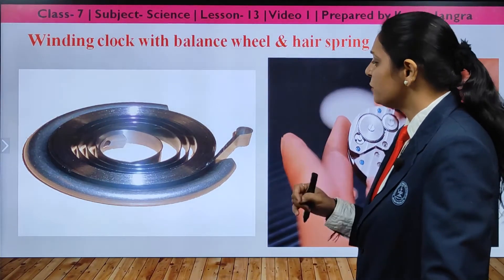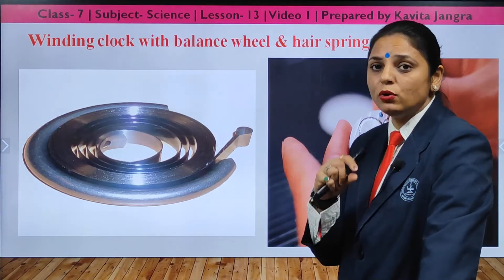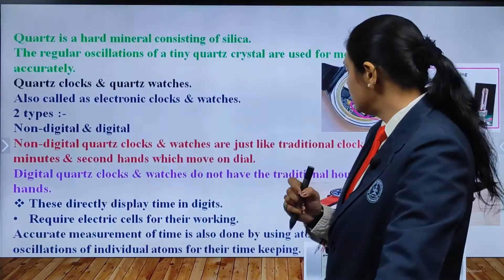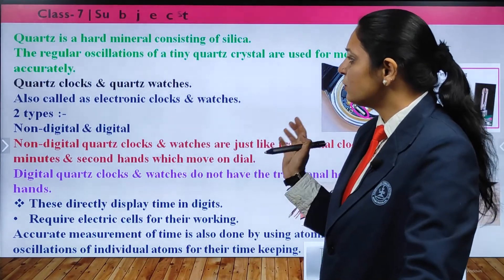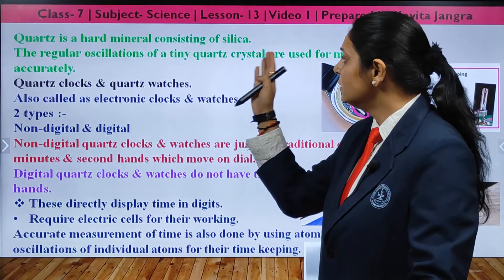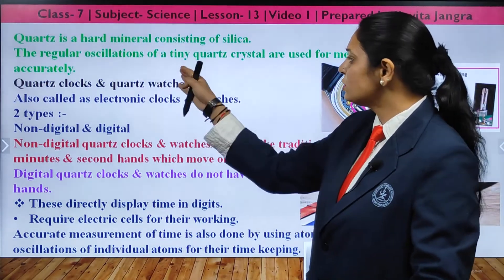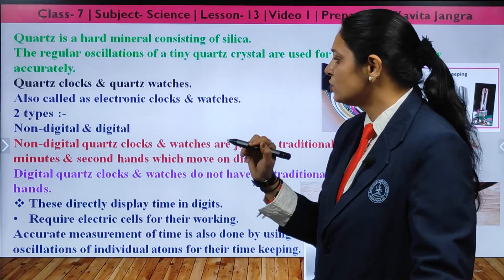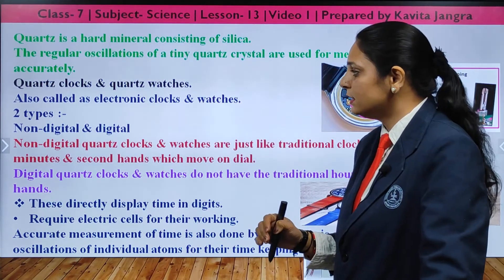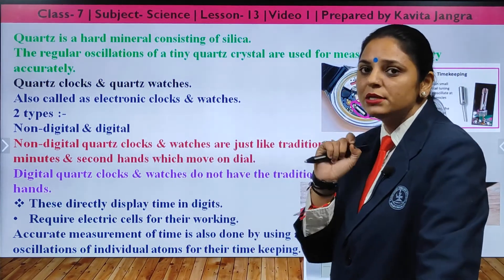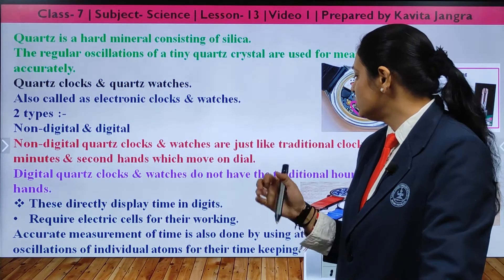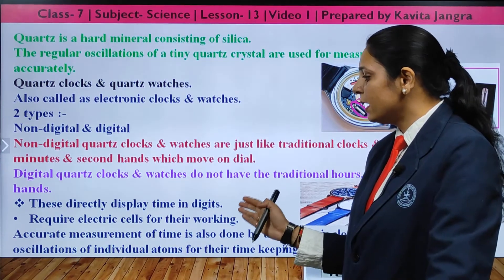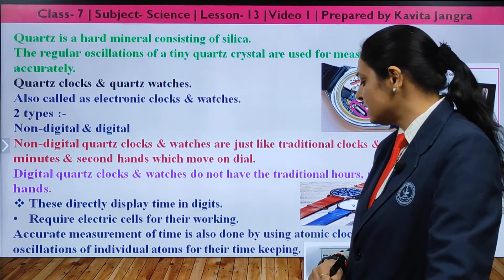The wheel and hairspring inside a watch control how the needles move — this also works on the simple pendulum principle, repeating in equal intervals of time. Quartz, a hard mineral consisting of silica, is used in quartz clocks and watches because of the regular oscillation of tiny quartz crystals, enabling accurate time measurement. Electronic clocks are also available. Non-digital clocks use needles, while digital clocks display time in digits and use an electric cell for working.